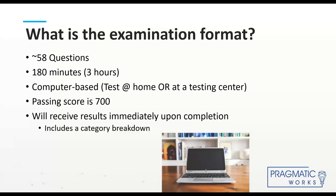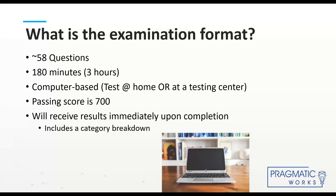The passing score is 700 — it's hard to say exactly what that means against 58 questions. You get your results immediately upon completion, and it tells you how you did in each category. Those skill categories will tell you whether you're on par with everyone else, better, or need improvement — but it doesn't tell you how many questions came from each category, just how you did relative to everyone else.